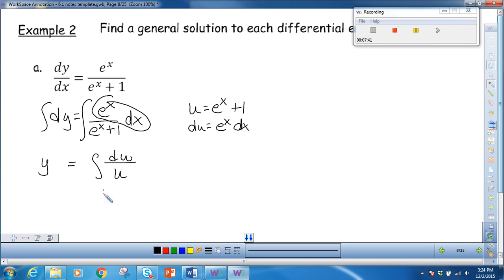So I can replace this with du over u. And that integrates to the natural log of u plus c, which becomes the natural log of e to the x plus 1 plus c. Because I have y by itself, there's nothing else I need to do. So my final answer is just y is equal to the natural log of e to the x plus 1 plus c. And that's it.